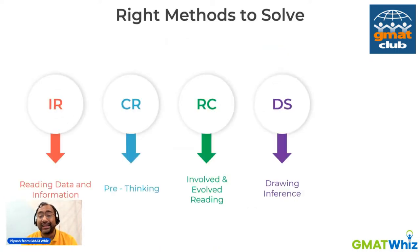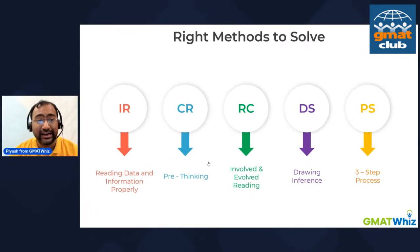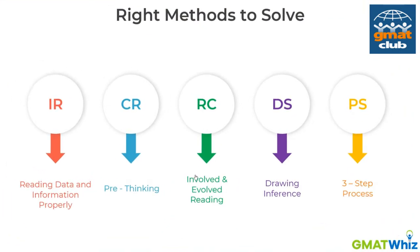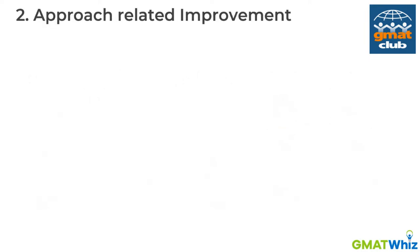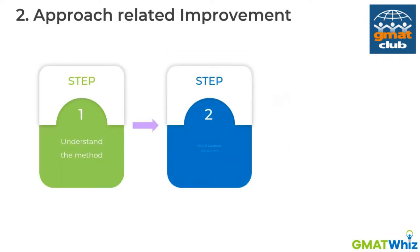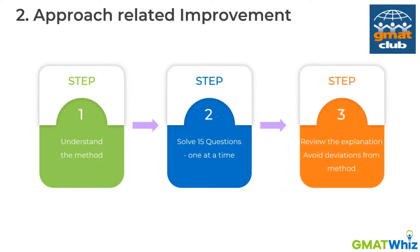You need to learn the right methods to solve questions for all different areas. To work on approach-related improvement: step one, understand the method; step two, solve 15 questions one at a time, looking at the explanation to identify any deviations from the methodology and improve on that particular part. These are the methods we recommend for the different areas — CR, RC, quant, and DI — and if you're not using these methods, you should start.